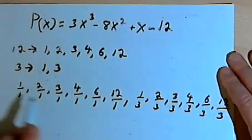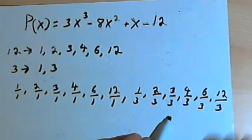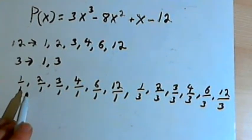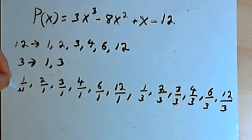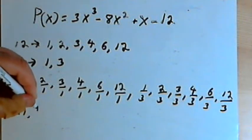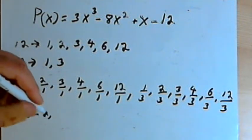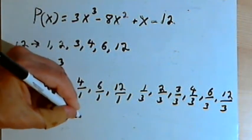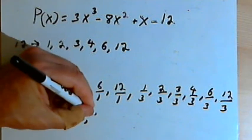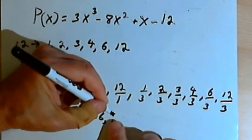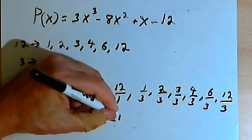Now I want to simplify the fractions as much as I can, get rid of any duplicates, and put in the plus or minus signs. So 1/1, I'll turn that into ±1; 2/1, that's ±2; then ±3, ±4, ±6, and ±12.